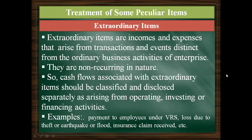Extraordinary items are income and expenses that arise from transactions distinct from ordinary business activity — they are non-recurring in nature. Cash flows associated with extraordinary items should be classified and disclosed separately as arising from operating, investing, or financing activity, wherever applicable. Examples include payment to employees under Voluntary Retirement Scheme (operating activity), loss due to theft, earthquake, or flood, and insurance claim received.